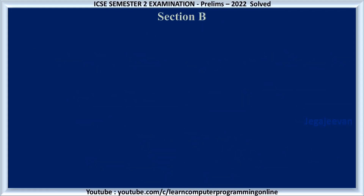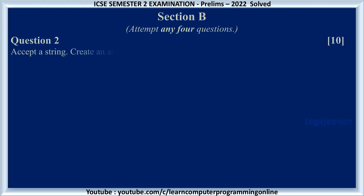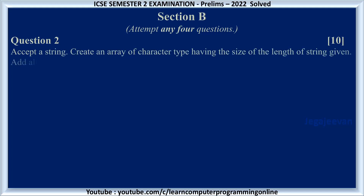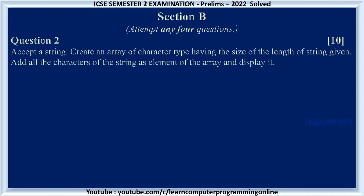Section B. Attempt any four questions out of six. Question number starts from 2. Accept a string, create an array of character type having the size of the length of the string given. Add all the characters of the string as elements of the array and display it.